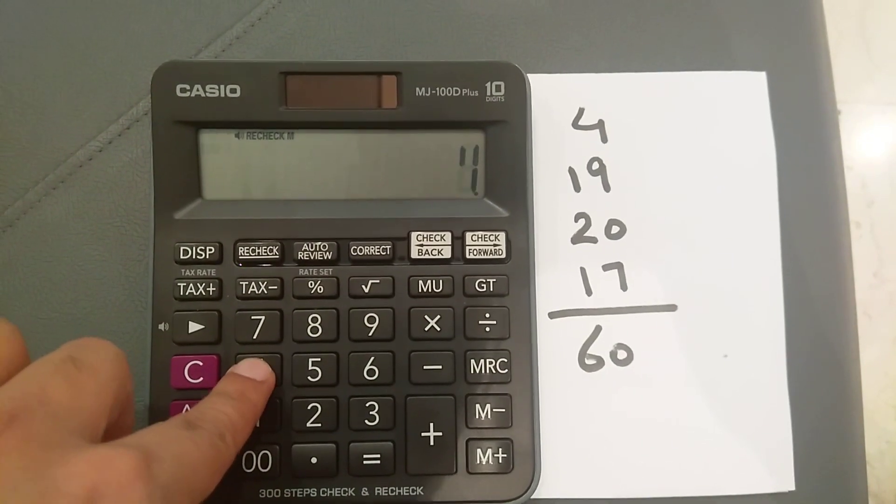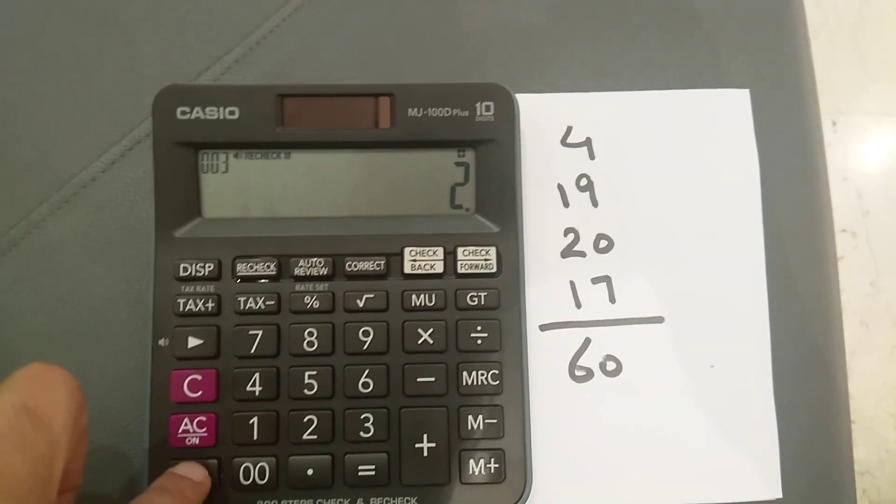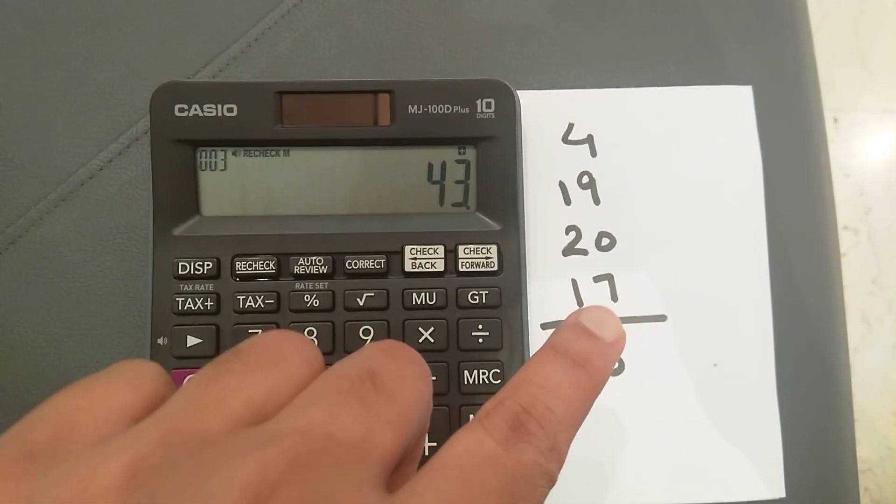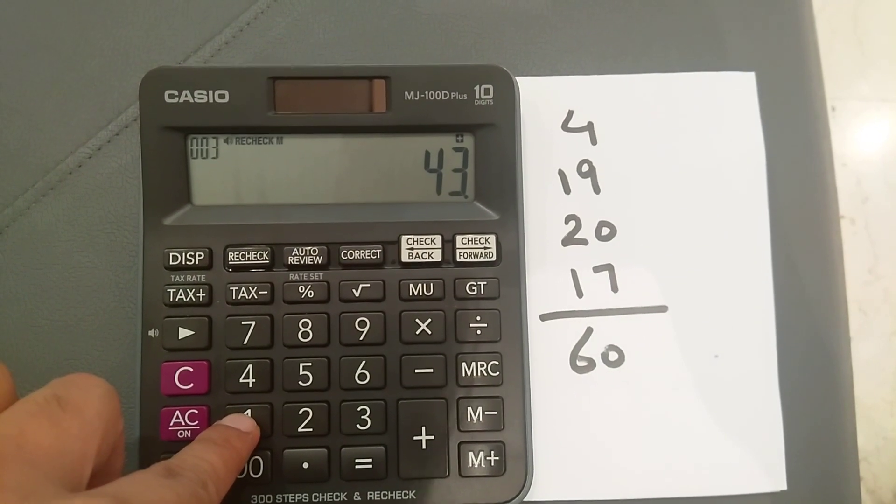For example, I add 4 plus 19 plus 20. Now here, instead of 17, if I put 19, let's see what it will do.